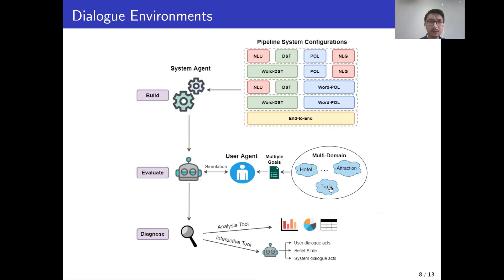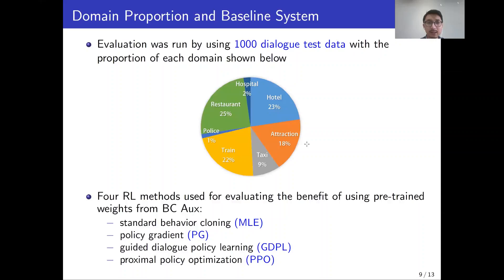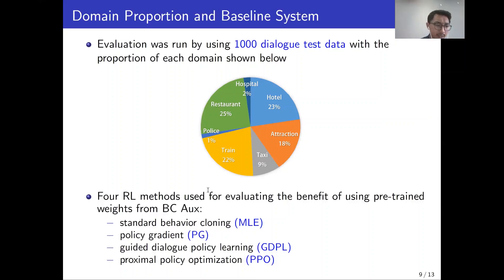We run our experiments in the ConvLab2 framework using the MultiWOZ 2.1 dataset, with 1000 dialogue test samples and four RL methods: behavior cloning, policy gradient, GDPL, and PPO.